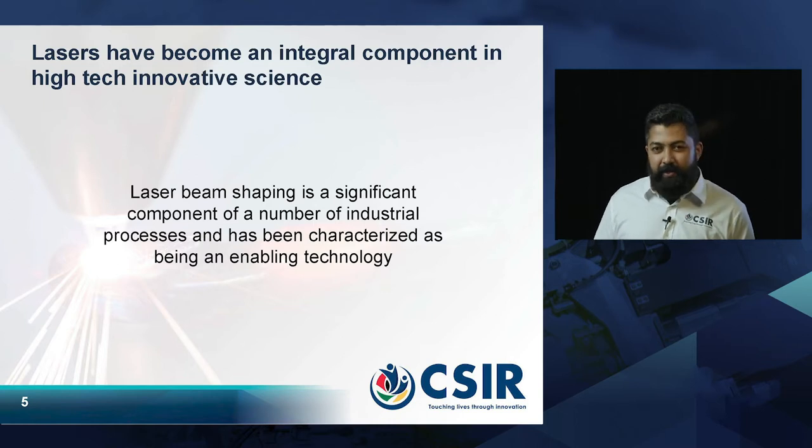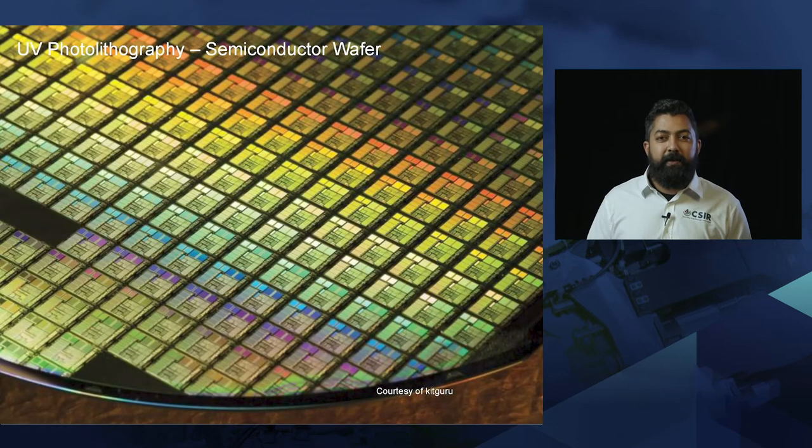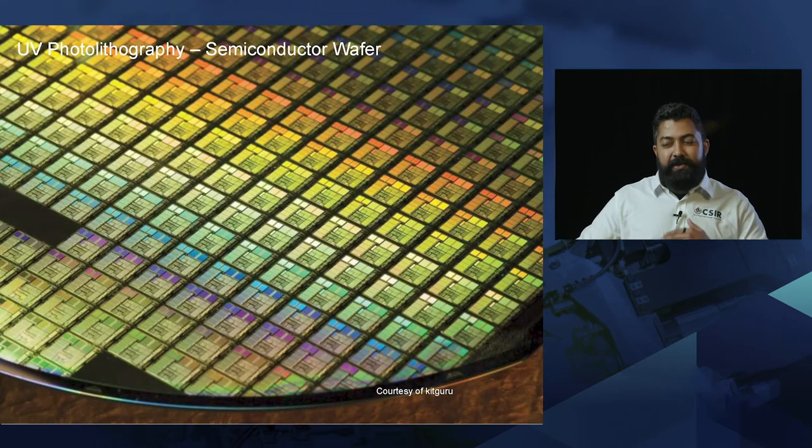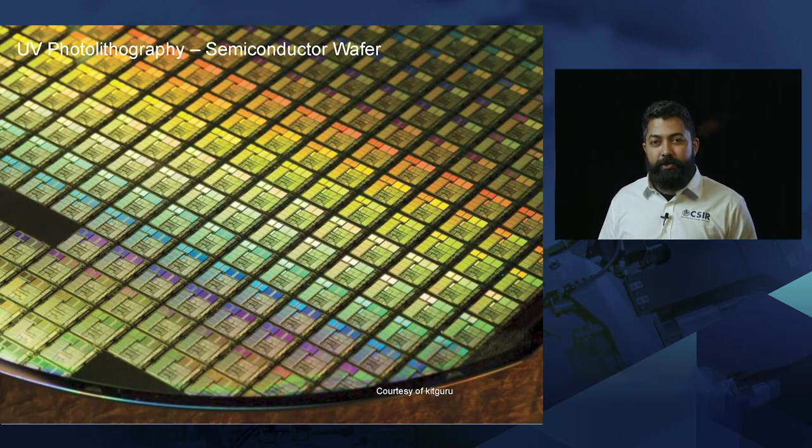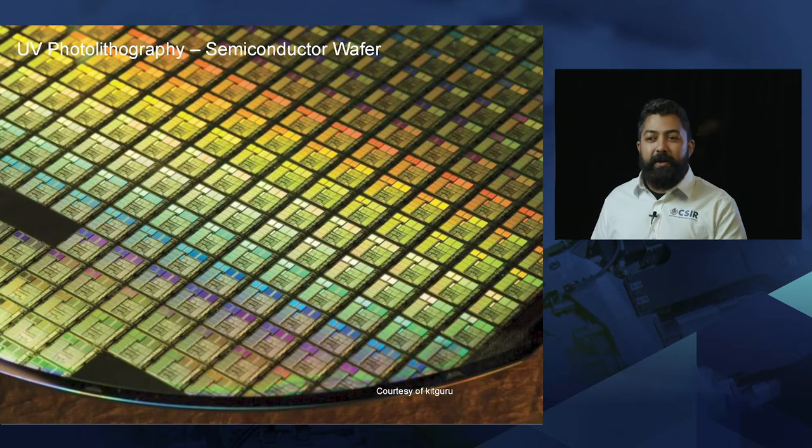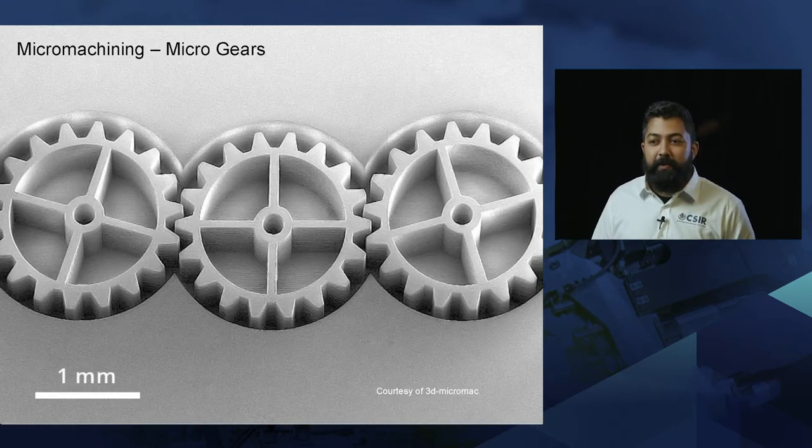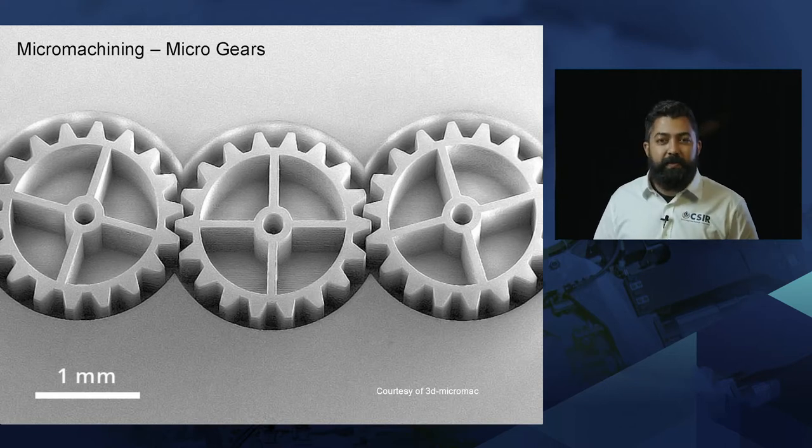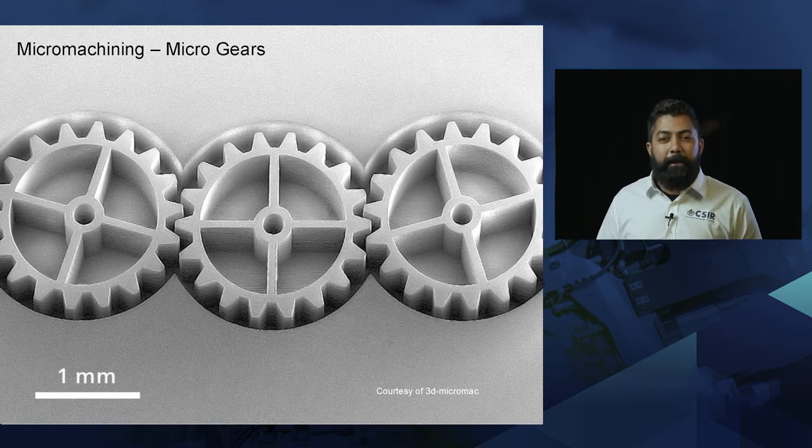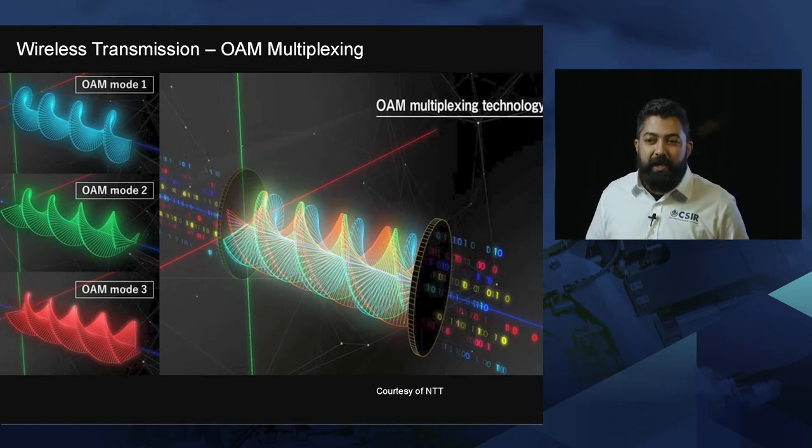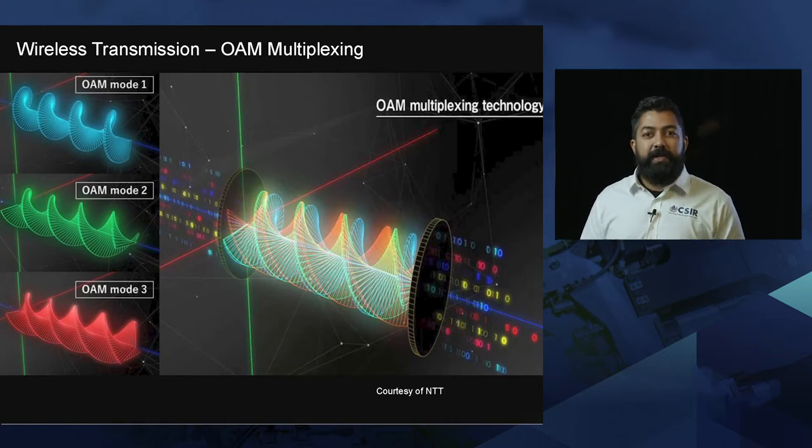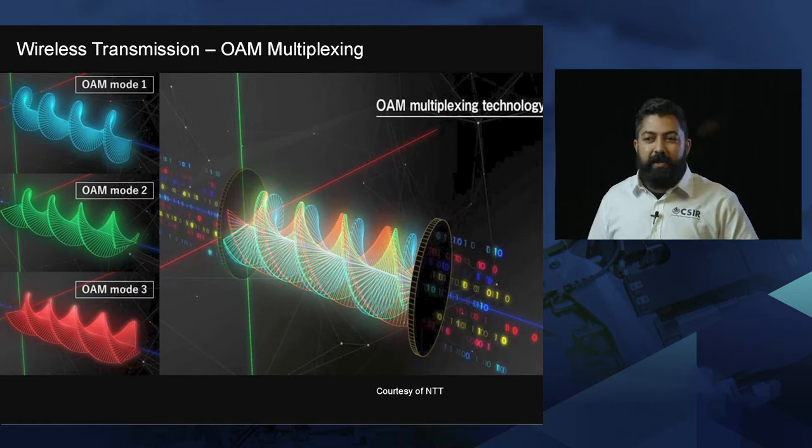Sometimes we want to change that beam shape to match the application better, to something more exotic like beams with these petals or beams with these rings. Beam shaping has been characterized as an enabling technology for the future. In UV photolithography, beam shaping has been able to be used with annular beams or flat top beams. If we look at micro-machining in terms of creating micro-gears, here we would use a flat top beam or even an annular beam so that the edges or cogs are made a lot smoother. If we look at wireless transmission in terms of communication, here we use these very twisted type of beams, which are called orbital angular momentum beams or simply OAM beams or vortex beams.